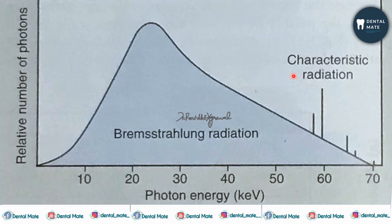This is it about how X-rays are produced — characteristic radiation and Bremsstrahlung radiation. Do not forget to like, share, and subscribe to my channel, and hit the bell icon if you don't want to miss the latest updates. Thank you. Keep visiting. Bye.